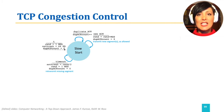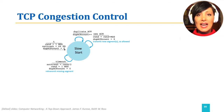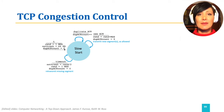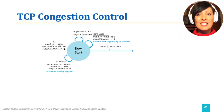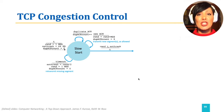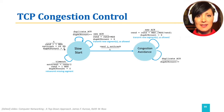A timeout while at this state would reset CWND to 1 and restart the slow start from the beginning. When the congestion window reaches the slow start threshold value, the state will change to congestion avoidance.